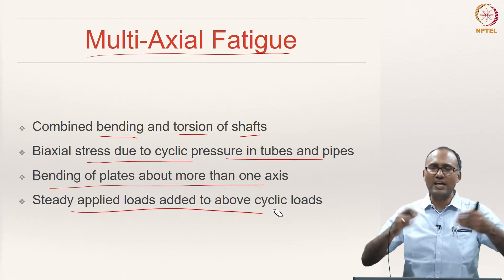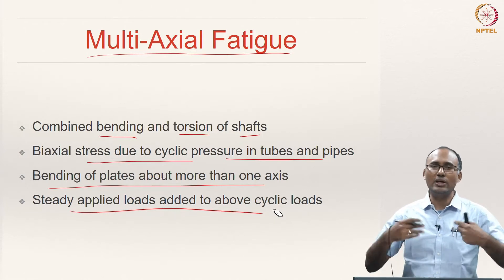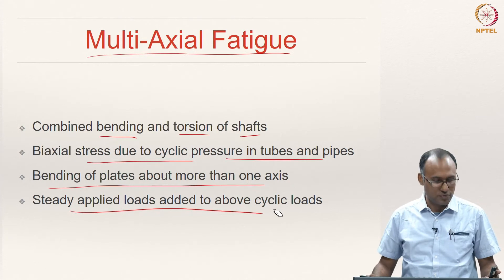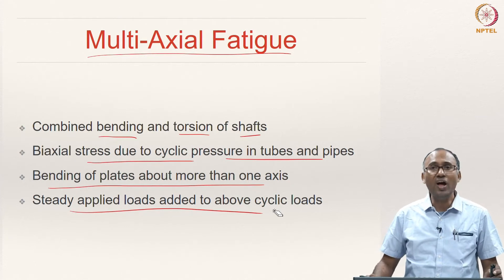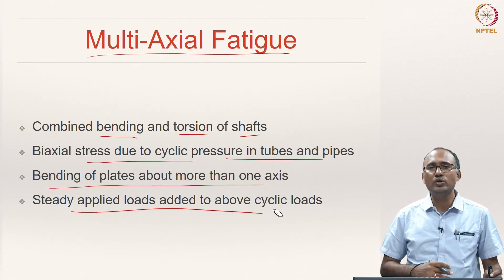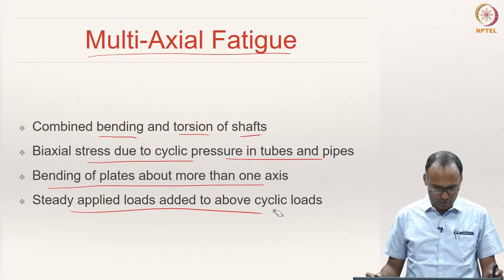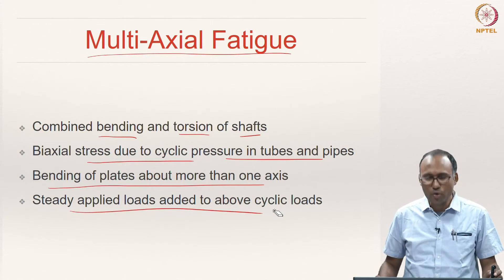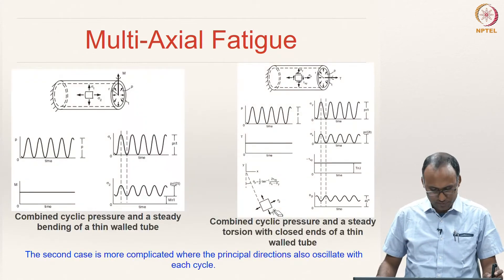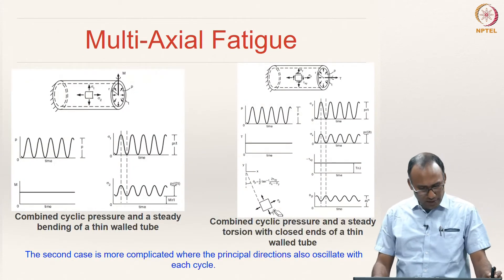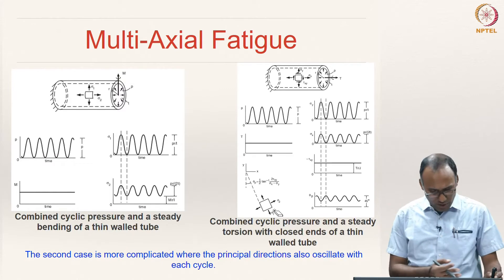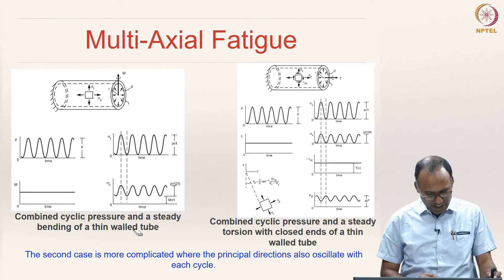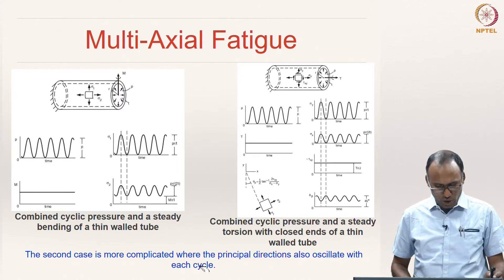In addition to these cyclic loads you can also have some steady load acting on the system. These are all going to contribute to a multiaxial loading scenario. This is one example of a combined cyclic pressure and steady bending of a thin-walled tube.